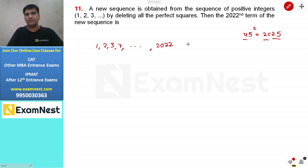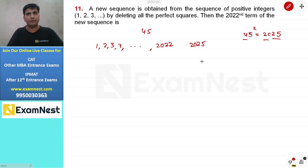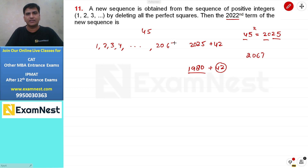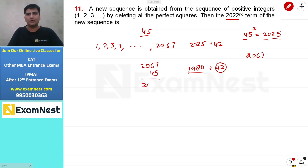If we move to 2025, we have 45 perfect squares. Because we have 45 perfect squares, that means up to 2067, the total terms will be 2067. Up to here, there are 45 perfect squares. If we remove them, then 2067 minus 45 gives us 2022. So the 2022nd term will be 2067.